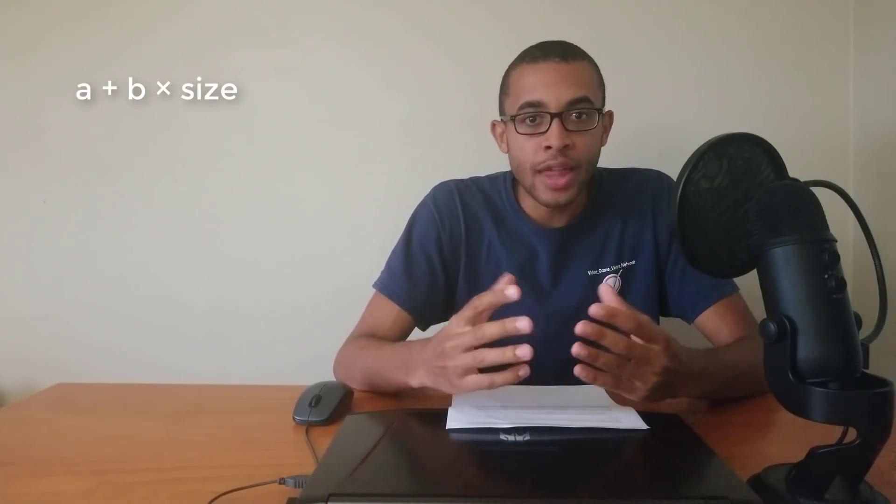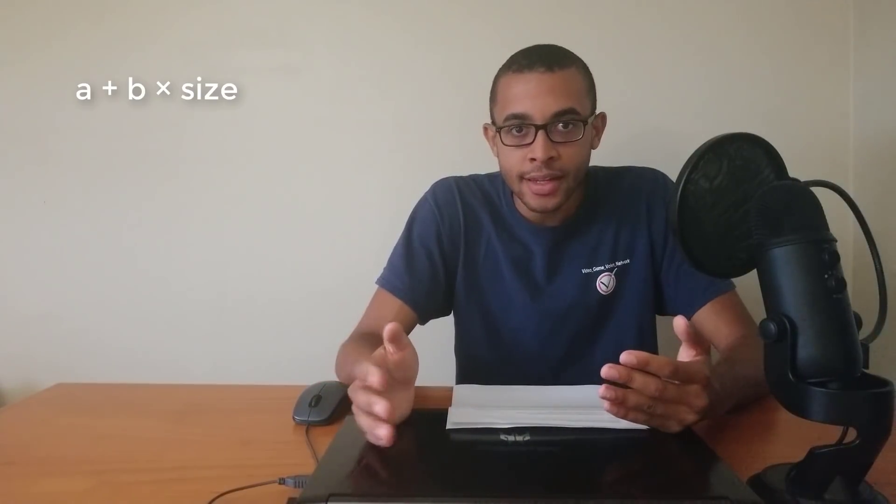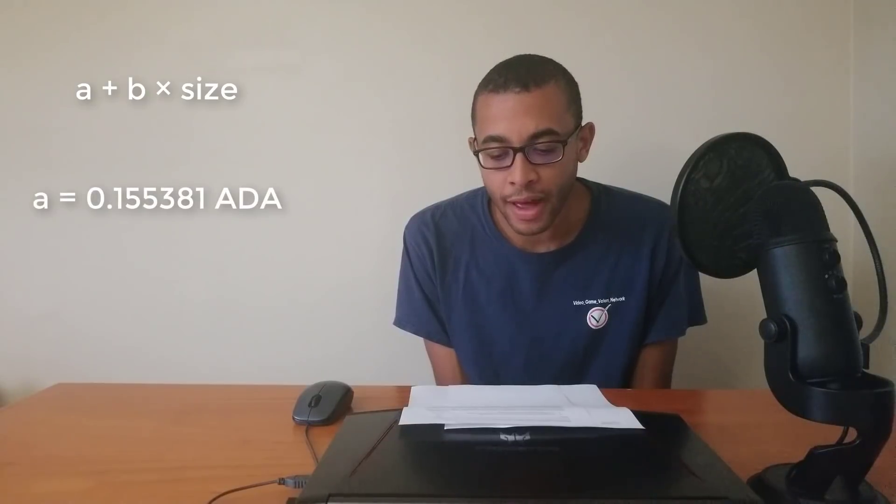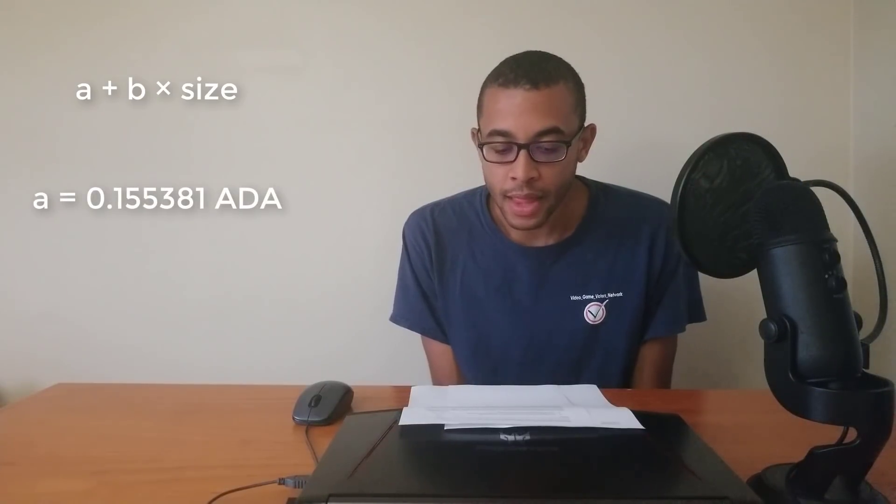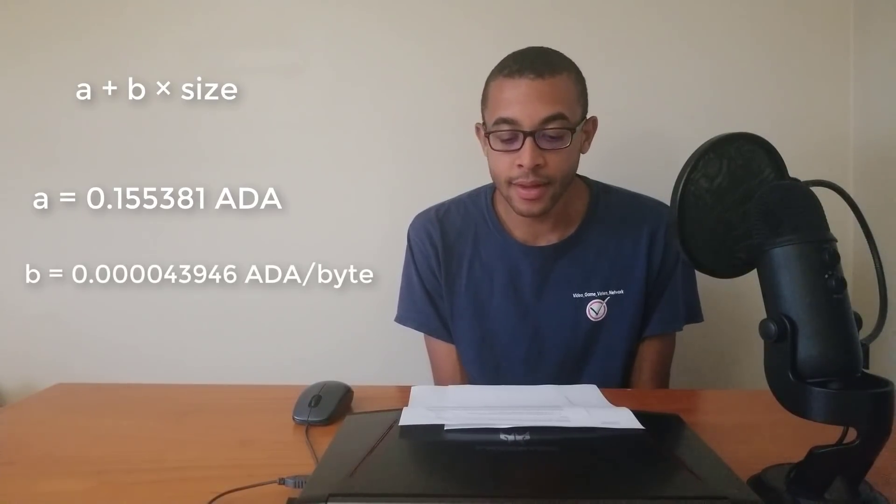So when we're talking about minimal transaction fees in Cardano, there's a formula to follow and it's called A plus B times the size of the actual transaction. So that's the number of bytes. A is a special constant, B is a special constant, and the size is the number of bytes within that particular transaction. The special constant A represents 0.155381 ADA and the special constant B is 0.000043946 ADA per byte.